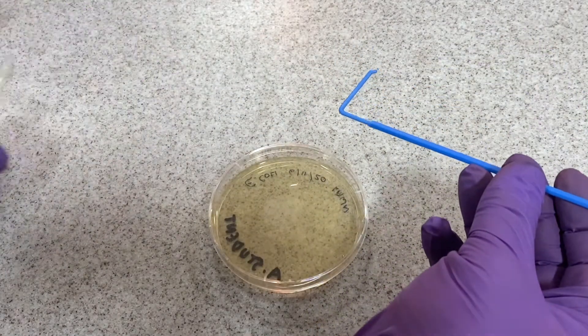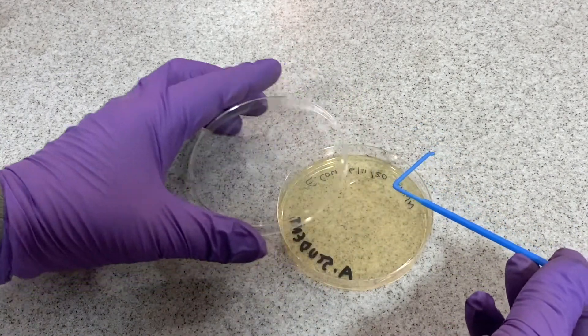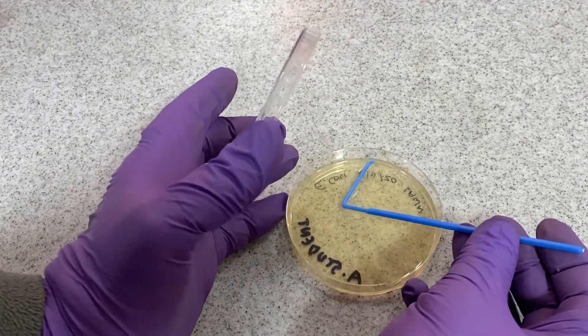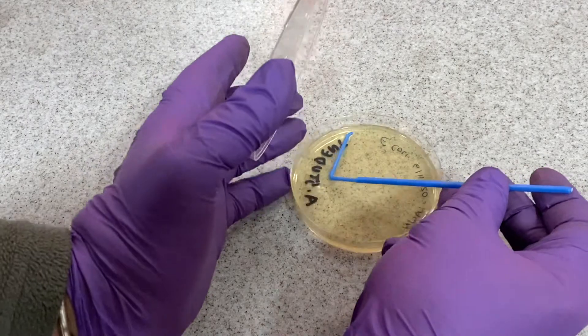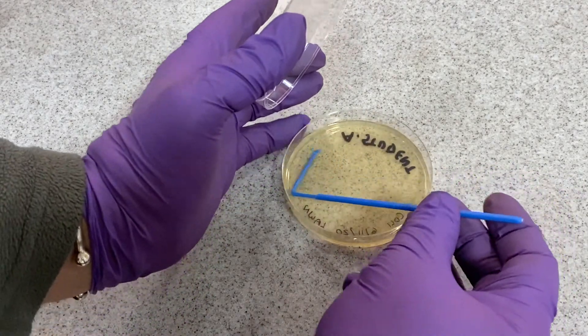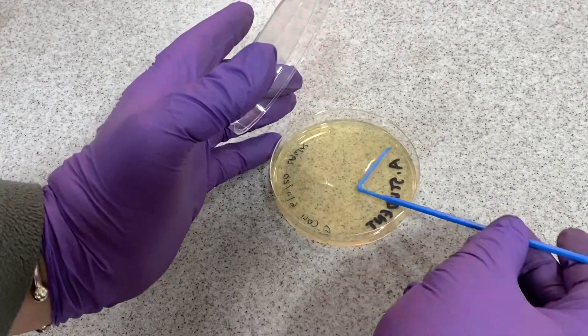Either a disposable spreader like this one in the example or a glass spreader. The technique for this is to use the spreader in one direction and rotate the plate anti-clockwise, so that the spread of the bacteria is completely to the edges of the plate.